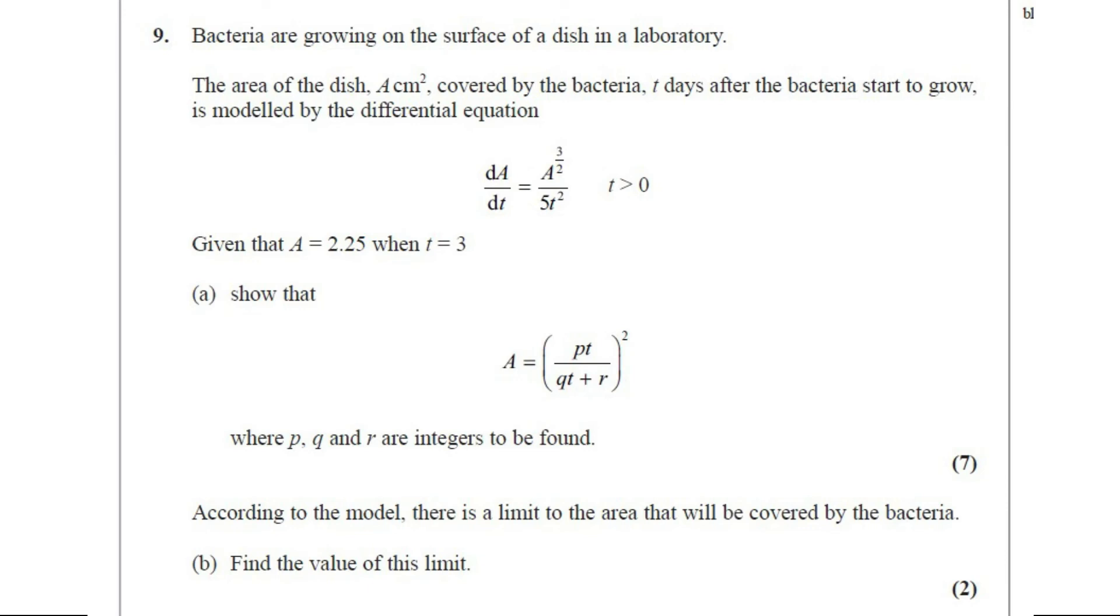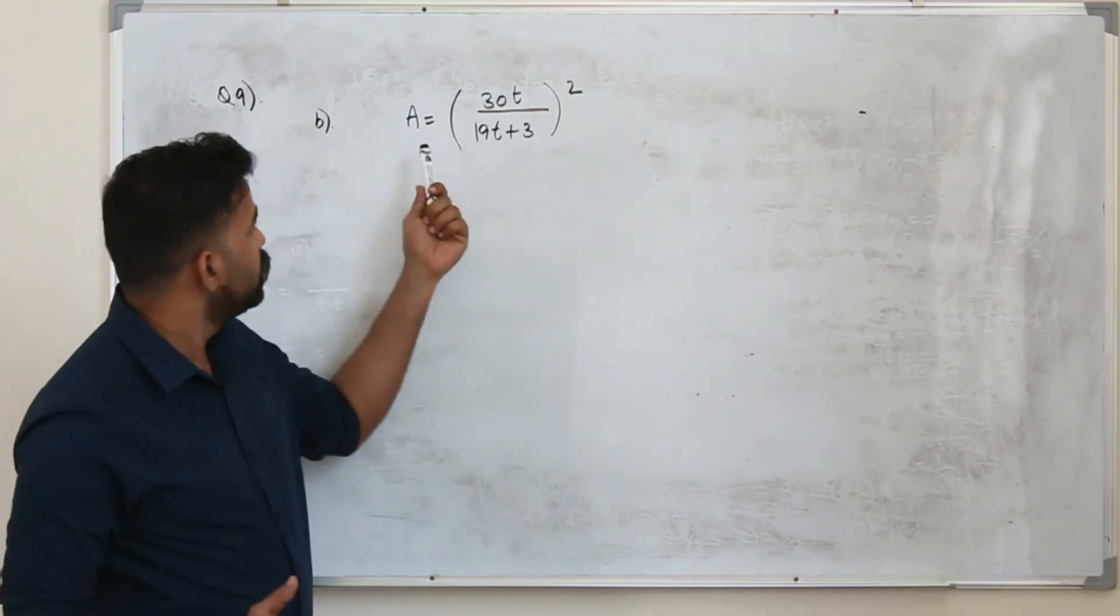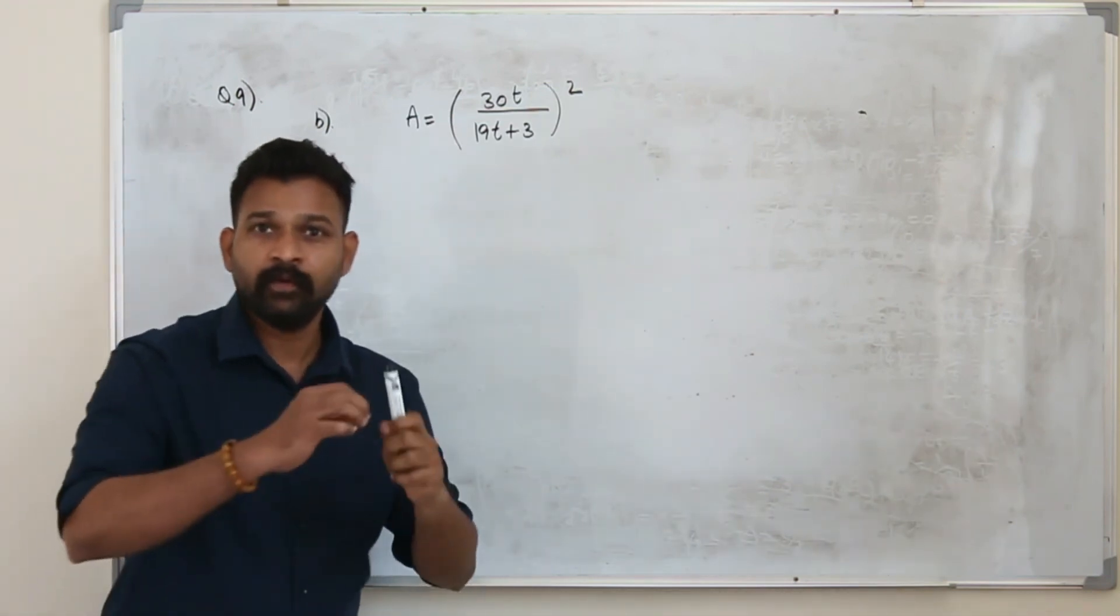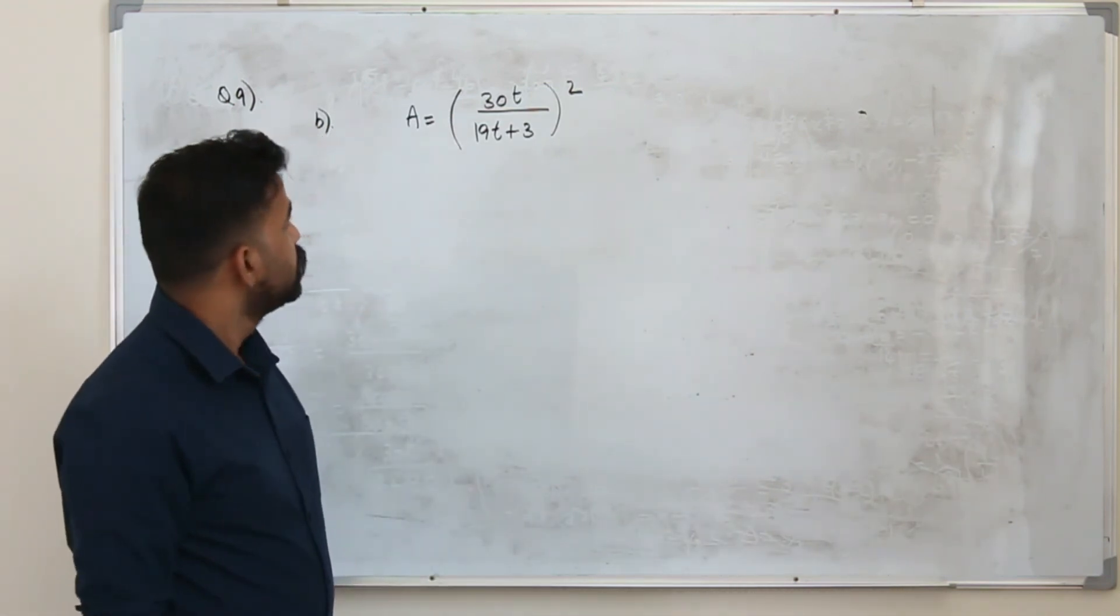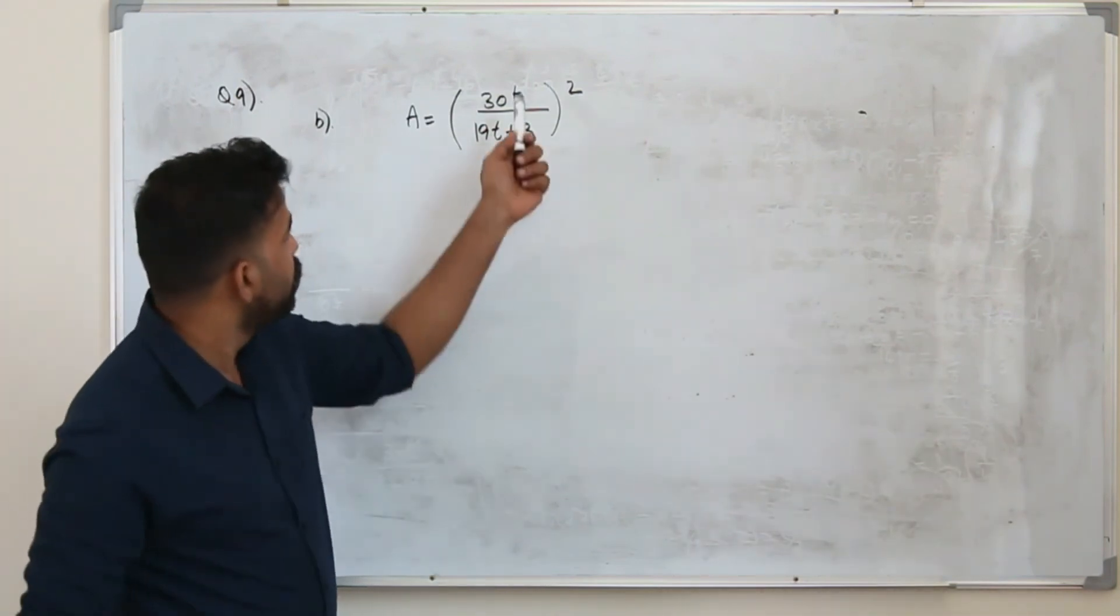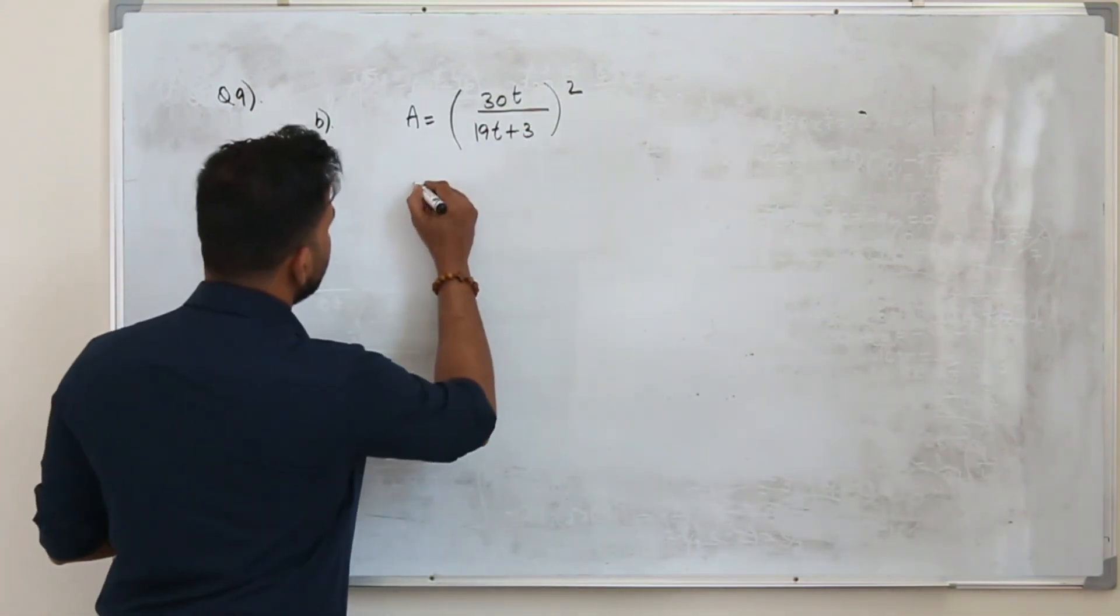According to the model there is a limit to the area that will be covered by the bacteria. Part b. Find the value of this limit. This question got 2 marks. Here they want you to find the limit of this area when time increases.